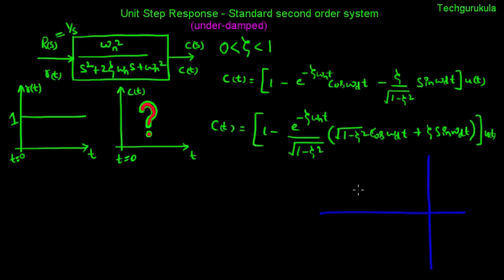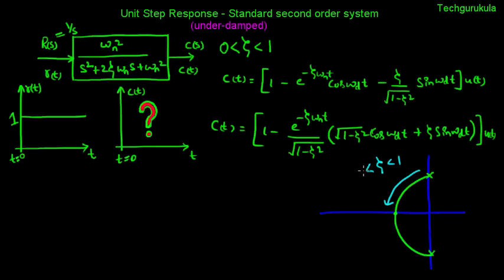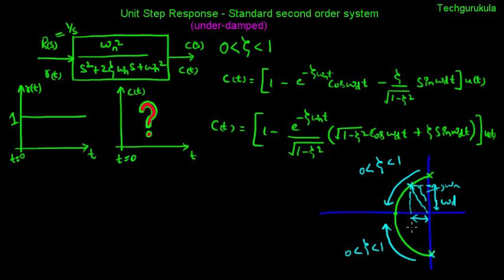For the underdamped case, the roots move on the s-plane at plus j omega n and minus j omega n when zeta equals 0. As zeta increases from 0 to 1, the roots move from the imaginary axis toward the real axis, meeting on the real axis at zeta equals 1. For any given root, the distance from the root to the origin is omega n, its projection onto the j omega axis has magnitude omega d, and its projection onto the real axis has distance zeta omega n.